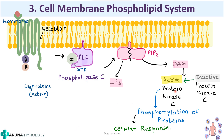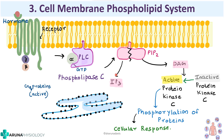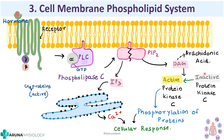IP3 acts on receptors on the endoplasmic reticulum and causes release of calcium, via which further cellular responses take place. So IP3 and DAG together act as second messengers in this system. DAG also causes formation of arachidonic acid from phospholipids, meaning these second messengers have many functions once activated.